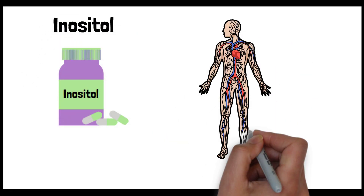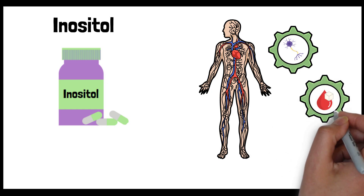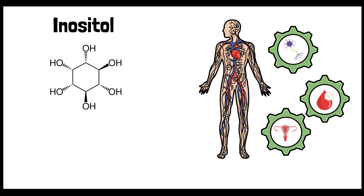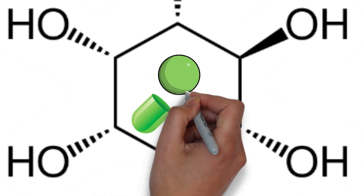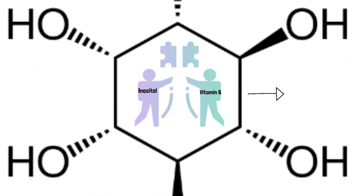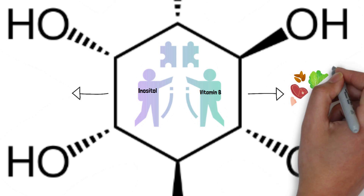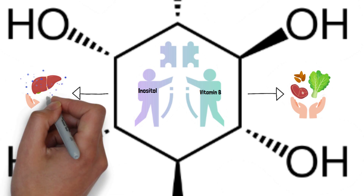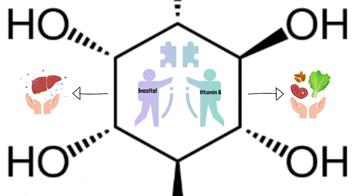Inositol is a type of sugar alcohol, or polyol, which plays an essential role in various biological processes within the body. Chemically, it is a cyclic carbohydrate with six hydroxyl groups, making it structurally similar to glucose. It is often mistakenly referred to as vitamin B8, but this is not entirely accurate. Unlike true vitamins, which must be obtained from the diet, inositol can be produced by the human body from glucose.